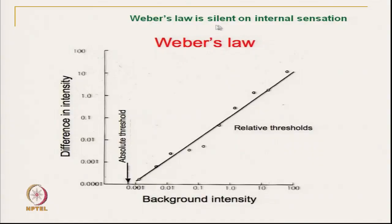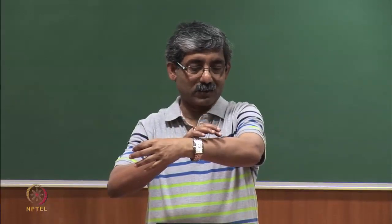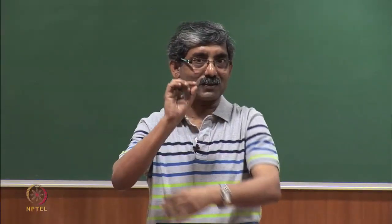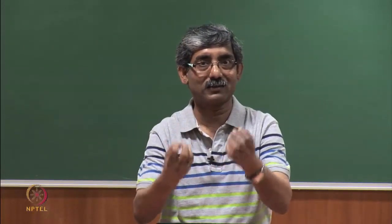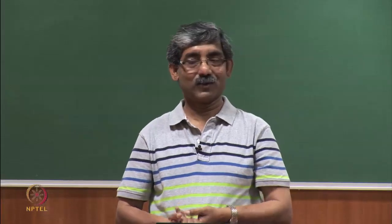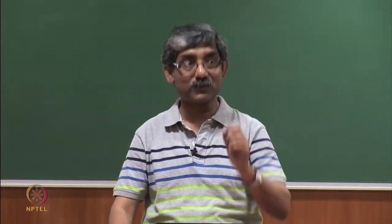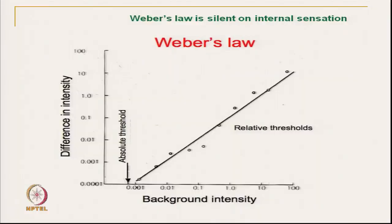Weber's law is silent on internal sensation. Only the background intensity is proportional to the difference in intensity, so at different levels of intensity we can make out differences — and this is the absolute threshold. When we start getting a signal — like after a certain pressure, our sensor will start receiving the signal — that is called the absolute threshold, the minimum change. This is Weber's law.